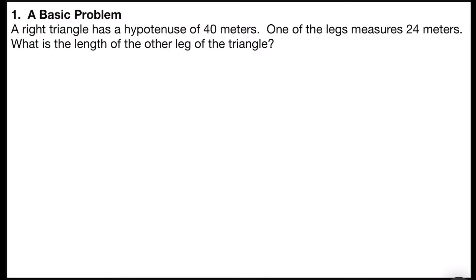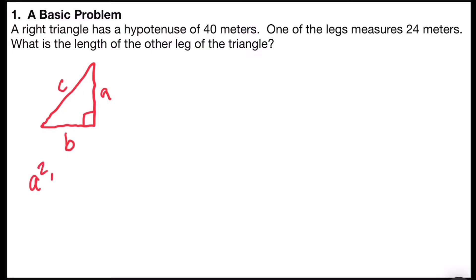The Pythagorean theorem is used for right triangles, and it says that the length of one of the legs squared, often called A, plus the length of the other leg squared, often called B, is equal to the length of the hypotenuse squared, often called C. Remember, the hypotenuse is the side that's opposite the right angle. Oftentimes you'll see the Pythagorean theorem written as A squared plus B squared equals C squared.